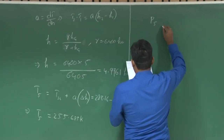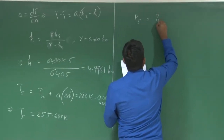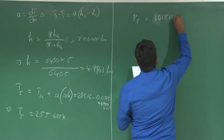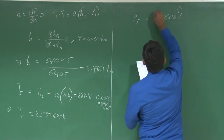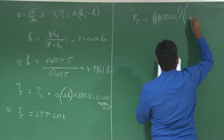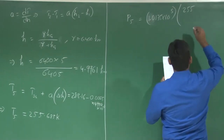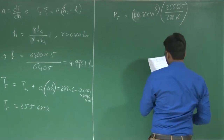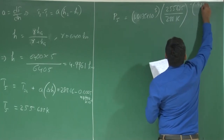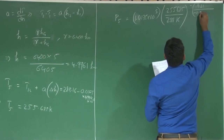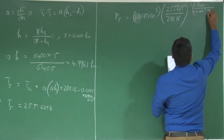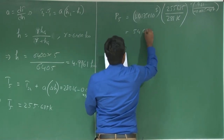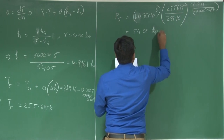Now, P at 5 kilometers equals P at sea level times (288.16 Kelvin divided by 288.16 Kelvin) raised to the power of minus 9.81 divided by (minus 0.0065 times 287). What you get from here is 54.08 kilopascals.